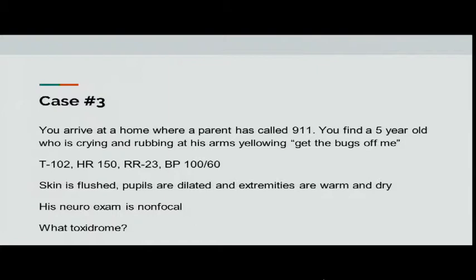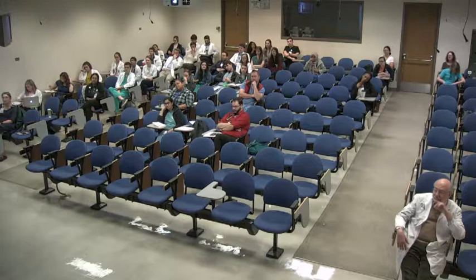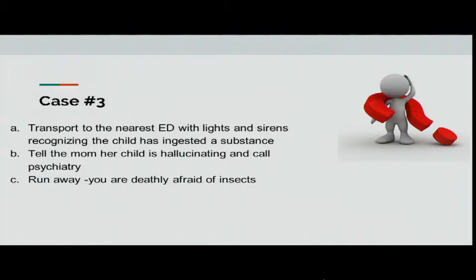Case three: you arrive at a home where a parent calls 911. You find a five-year-old girl who's crying, rubbing at her eyes and arms, yelling 'get the bugs off of me.' Temperature 102, heart rate 150, respiratory rate 23, blood pressure 100/60. The skin is flushed, pupils are dilated, extremities are warm and dry, and her neuro exam is abnormal. This is the anticholinergic toxidrome. You transport the patient to the nearest ED recognizing the child ingested a substance.